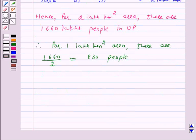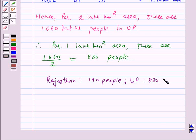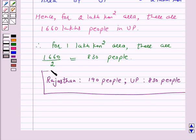Hence, the answer for this part is: in Rajasthan there are 190 people per km², and in UP there are 830 people per km².